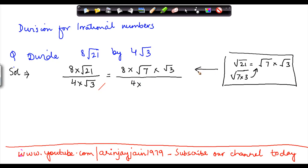Applying this property here, we wrote this as 4 into under root 3. Now under root 3 gets cancelled here. 4 goes into 8 two times. So what are we left with? We are left with 2 into under root 7, which is 2 under root 7. This is the answer.